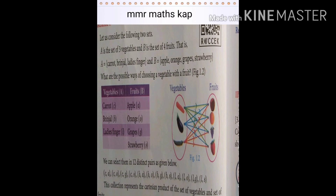Now let's learn about the Cartesian product. Consider two sets: A is a set of three vegetables — carrot, brinjal, lady's finger — and B is a set of four fruits — apple, orange, grapes, and strawberry. What are the possible ways of choosing a vegetable with a fruit? Using an arrow diagram, carrot pairs with apple, orange, grapes, and strawberry; brinjal pairs with all four; and lady's finger pairs with all four.